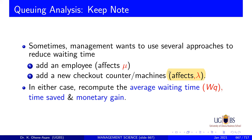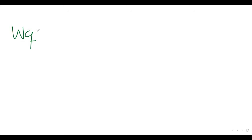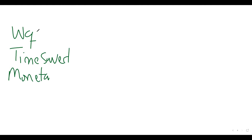Now, in either case, you've got to recompute the whole thing again — recompute the waiting time. That's why the Wq is very important. It's not only the waiting time you're going to cut. You're going to look at a situation where you recompute the waiting time, and the reason management would have done this is to save time. So you have to compute something for the time saved. And any time you save time, you will save money — monetary gain. Then, of course, there will be some costs associated with the machine or with the new employee, whether it's salary or machine maintenance. You've got to deduct all of these potential costs from the monetary gain, so that you get net gain.